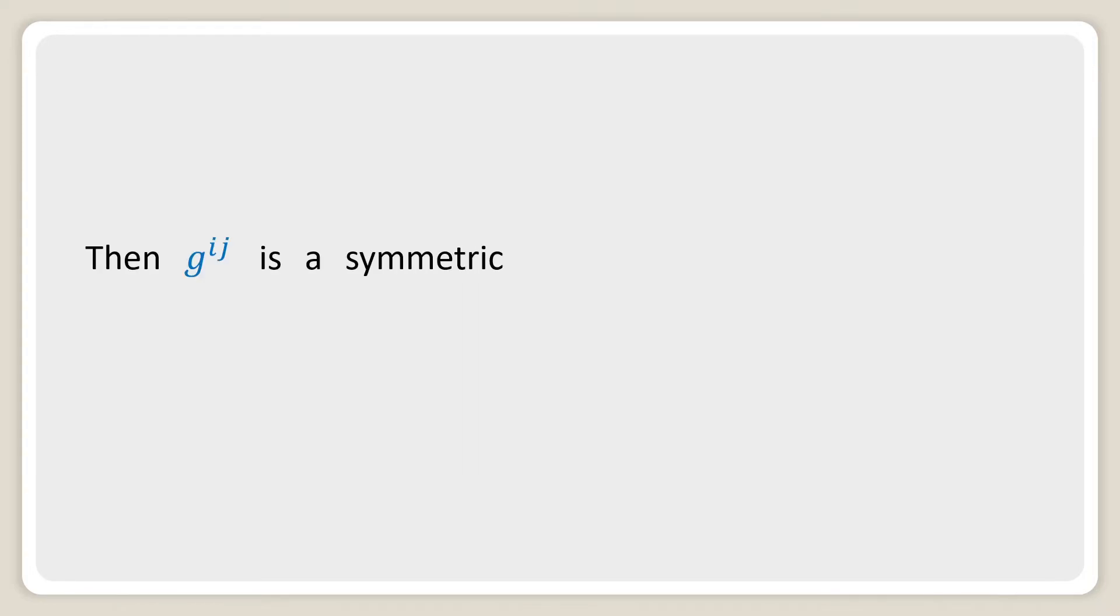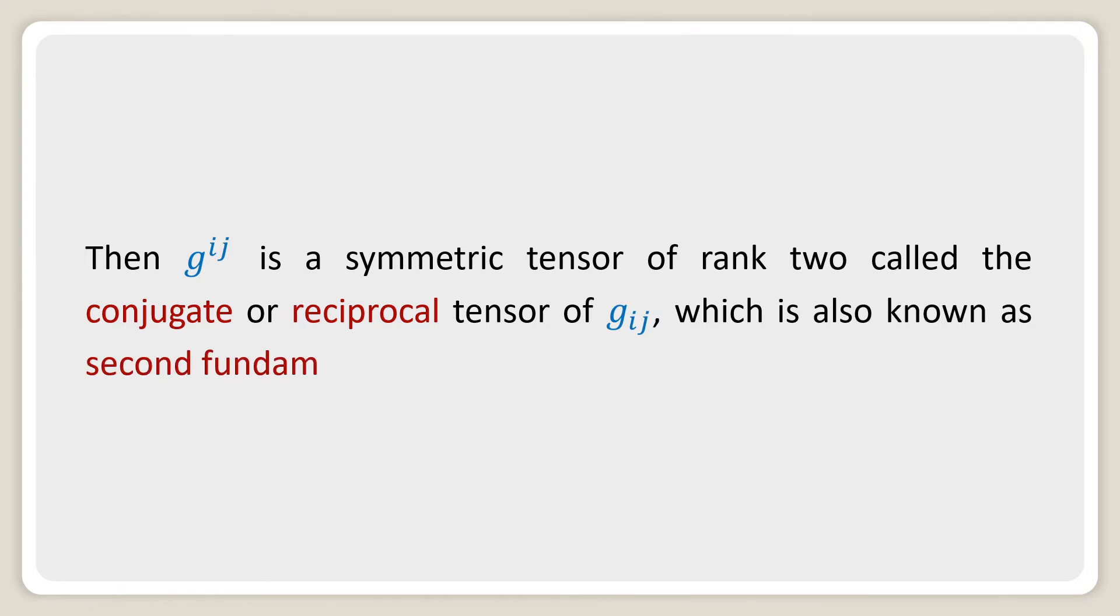Then g^ij is a symmetric tensor of rank 2 called the conjugate or reciprocal tensor of g_ij, which is also known as the second fundamental contravariant tensor.